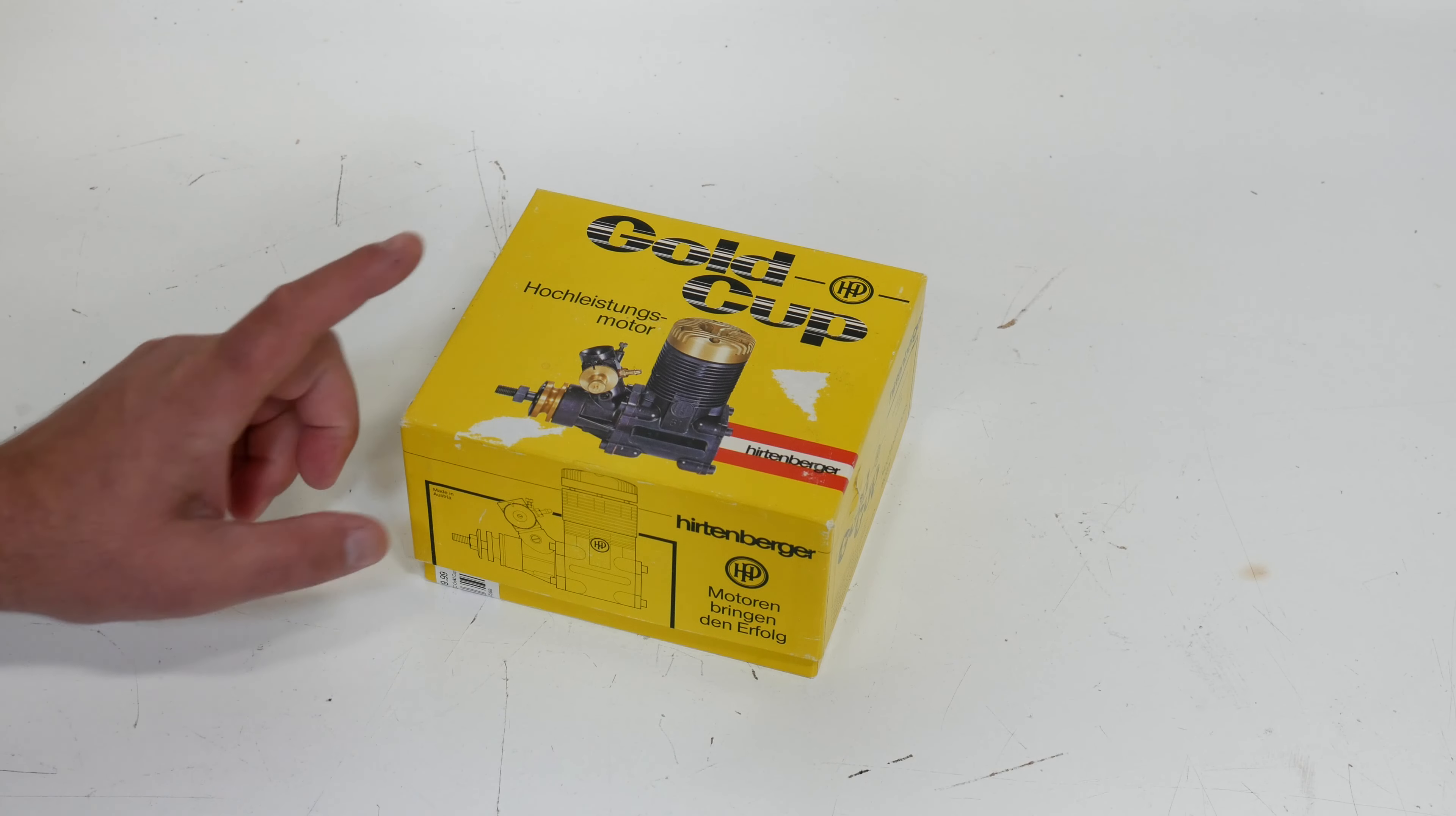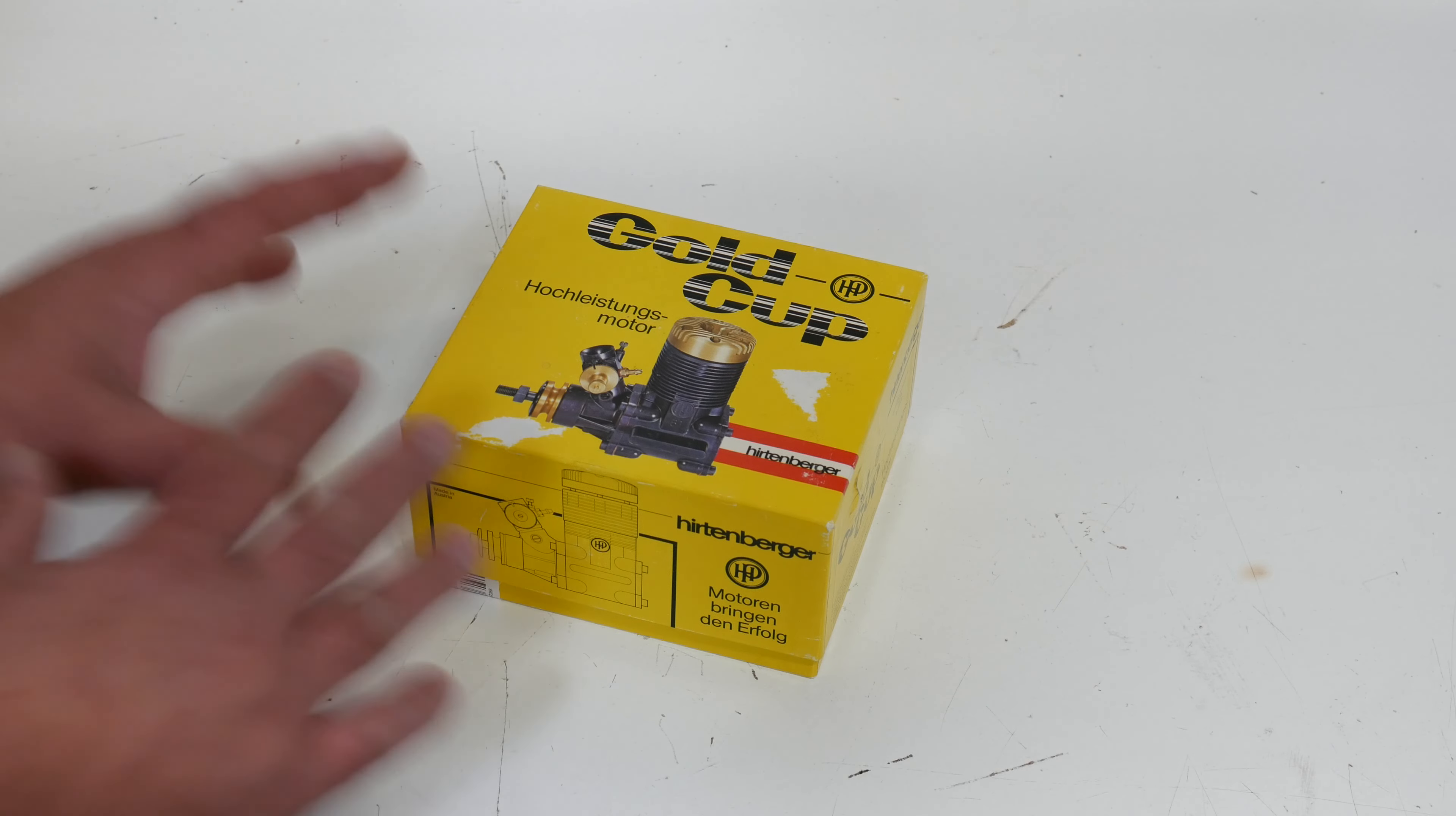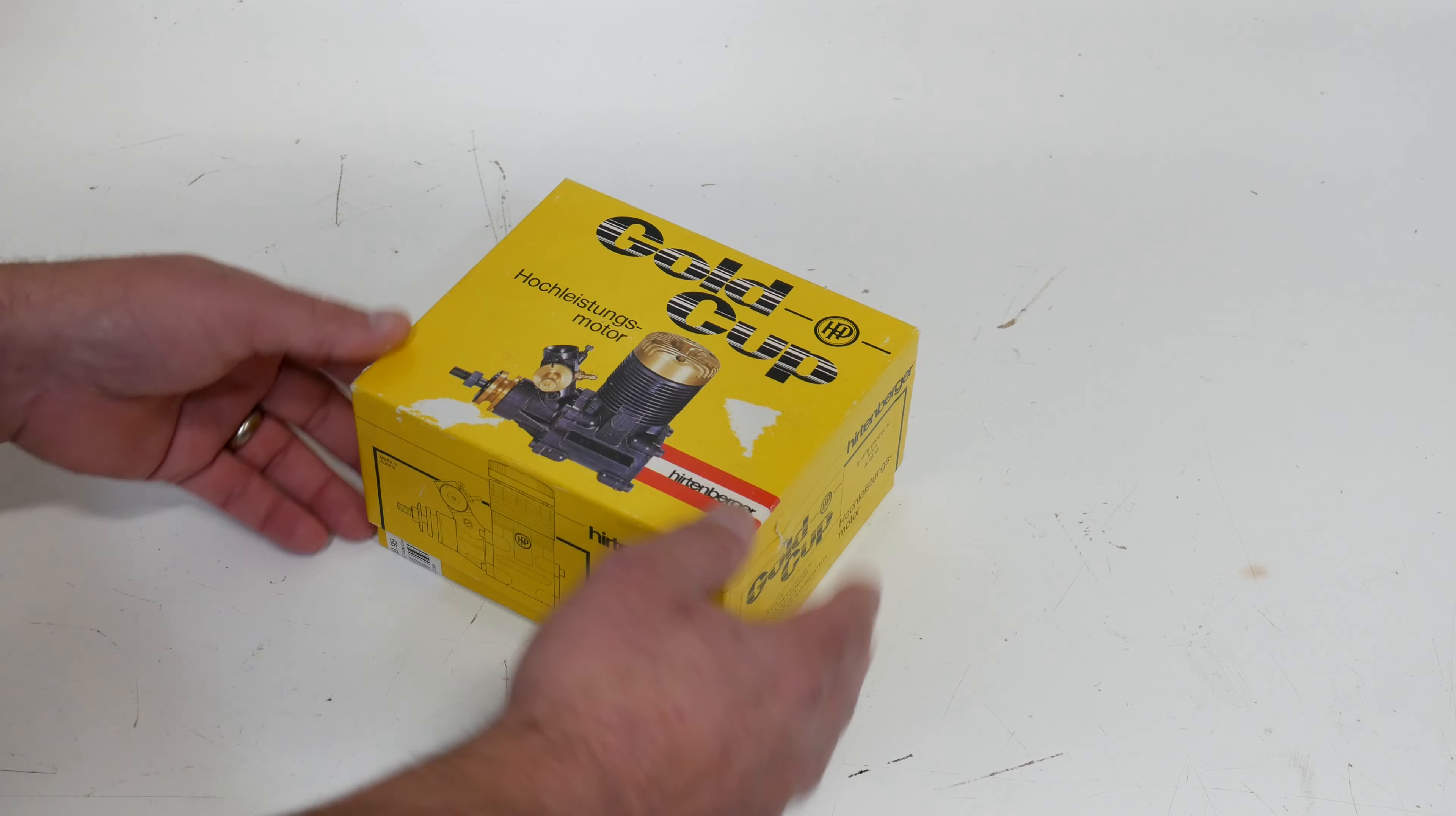Hey everybody, welcome back to the channel. Today I figured we'd do a little bit of an unboxing. This is a vintage HP Hertenberger Gold Cup 61 glow motor, and this is going to be going in my equally vintage Chaos that actually has an HP 61 Gold Cup in it that had a catastrophic failure.